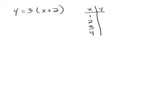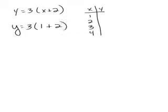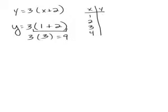So I'm going to put 1 in for x. In place of my x I'm going to put in 1, and then I'm going to follow order of operations. 1 plus 2 — doing parenthesis first — 1 plus 2 is 3, and 3 times 3 is 9. So y must equal 9 when x equals 1.